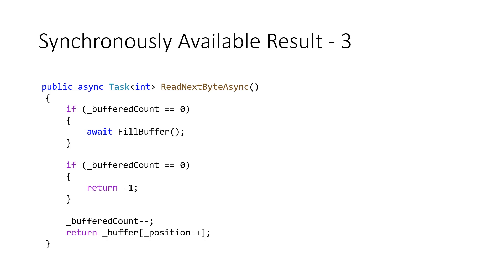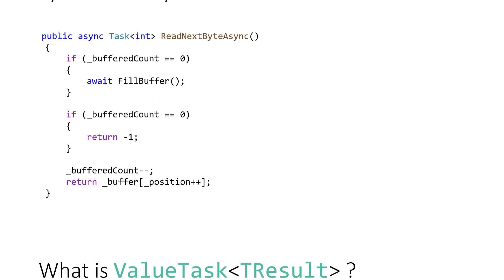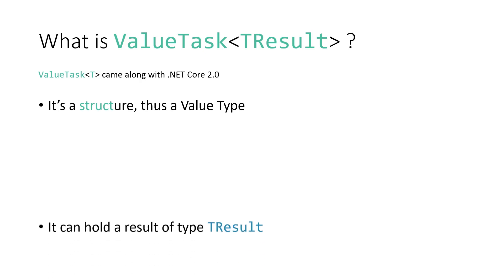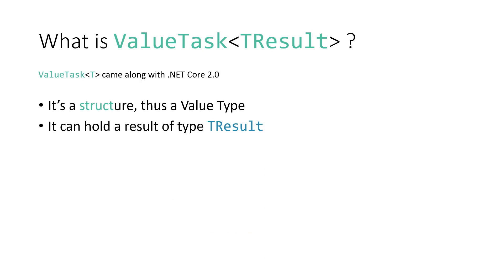Now that we know the problem, let's see the solution. ValueTask came along with .NET Core 2. What is a ValueTask? It is a struct, thus a value type, and if it's a value type there is no memory allocation — it lives on the stack, meaning the compiler knows this before even running the application. This is a significant performance improvement. This struct can hold a result of type TResult, and it can also hold a Task, so ValueTask is a wrapper.